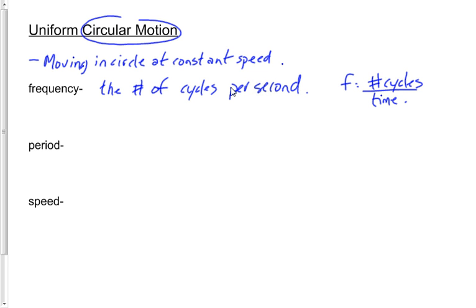The units that go along with frequency — we could say cycles per second. Does anybody know another unit that means the same thing as a cycle per second? The answer is hertz, abbreviated Hz. So one cycle per second, one revolution per second, one rotation per second equals one hertz.